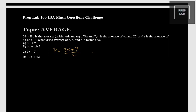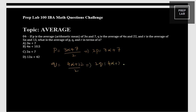We divide by 2 since there are two quantities. So we get: 2p = 3 alpha + 7. Then they say q is the average of 4 alpha and 22, so 2q = 4 alpha + 22.